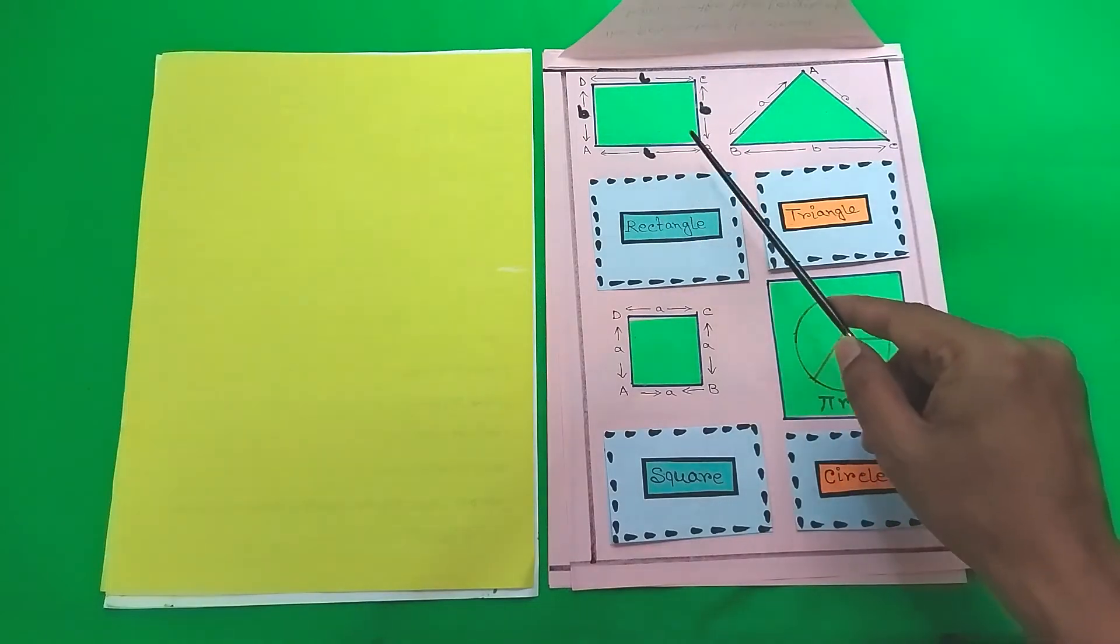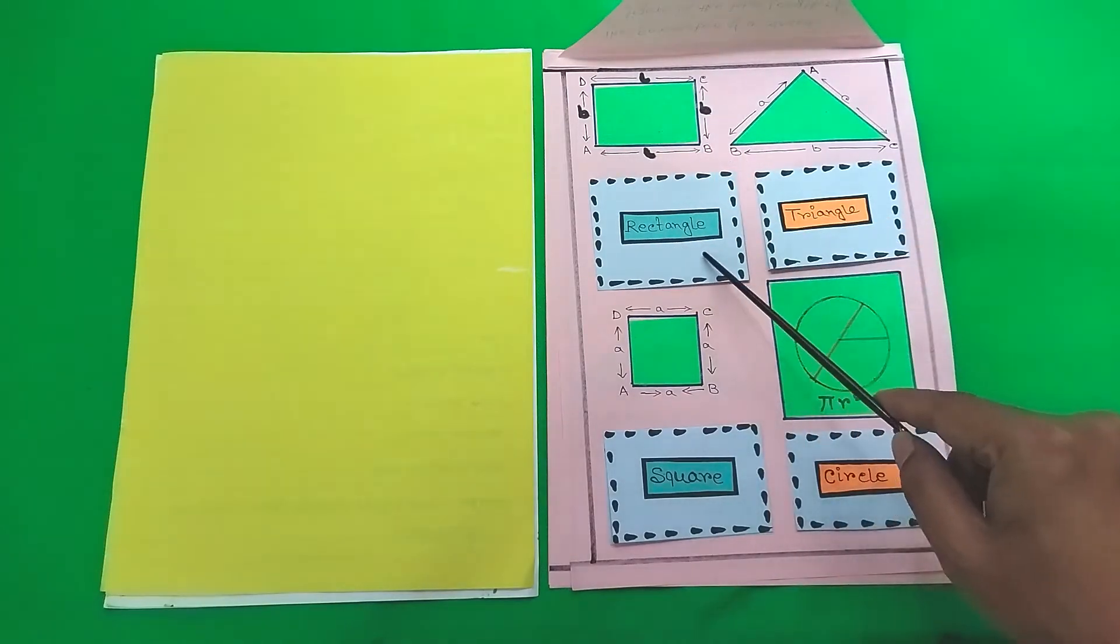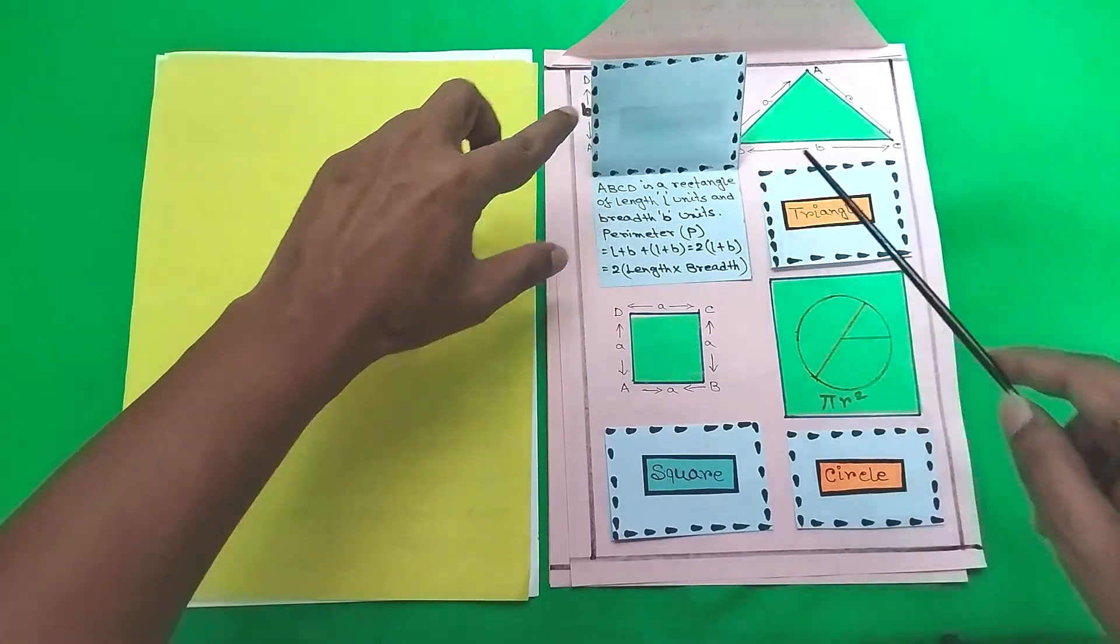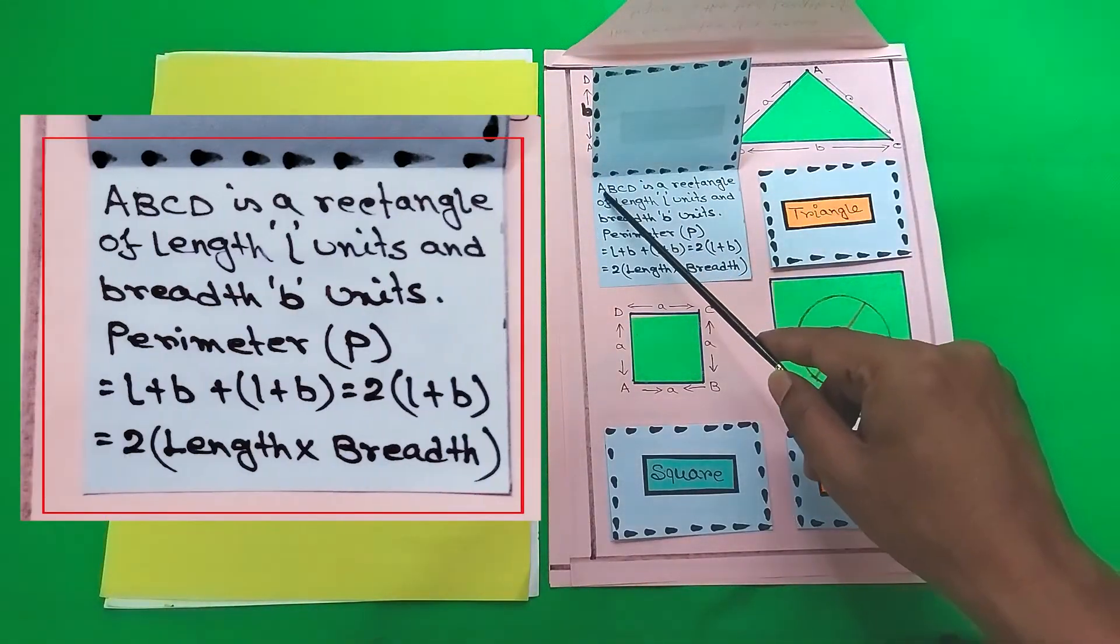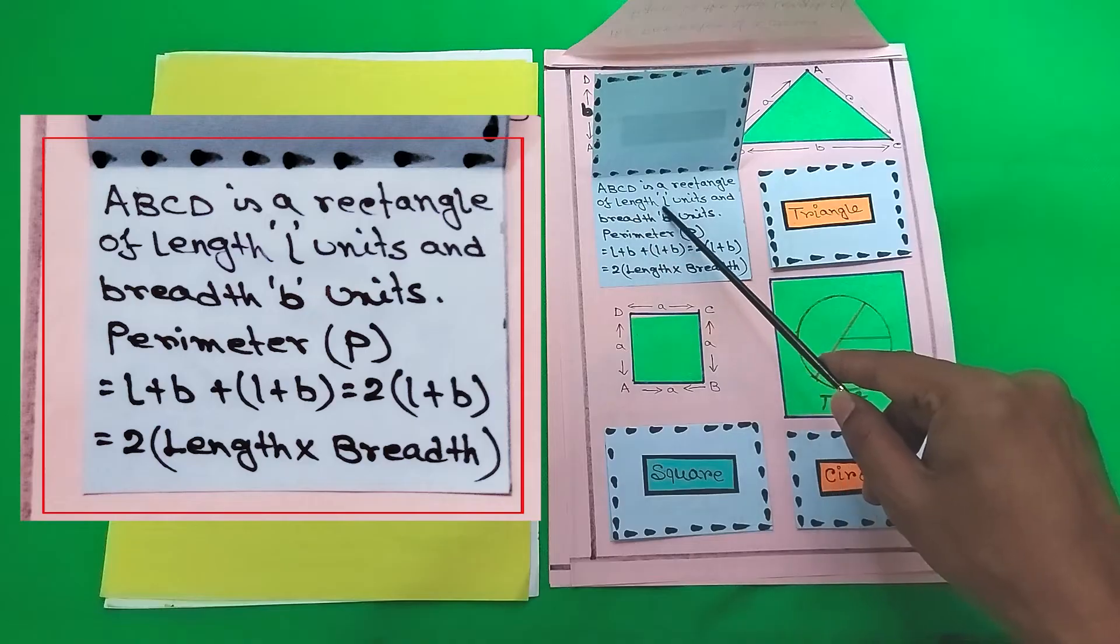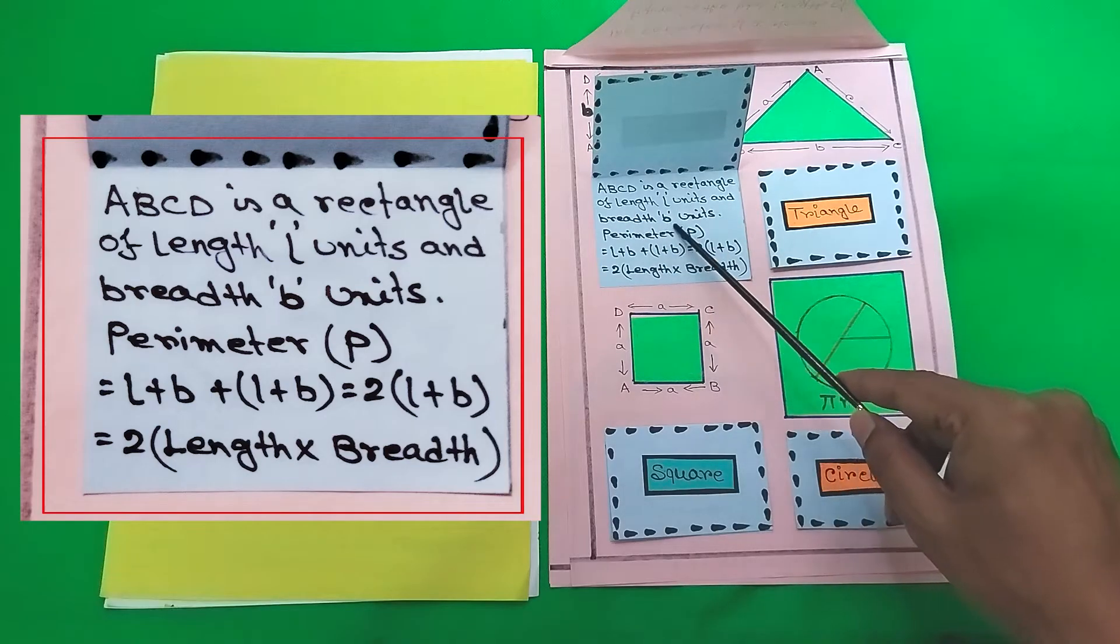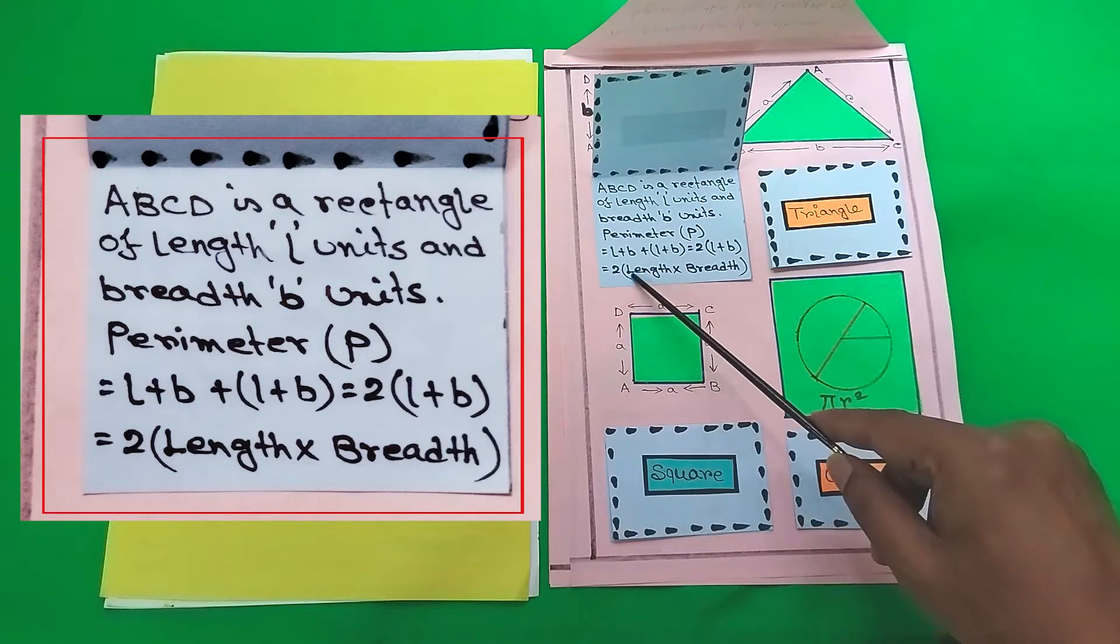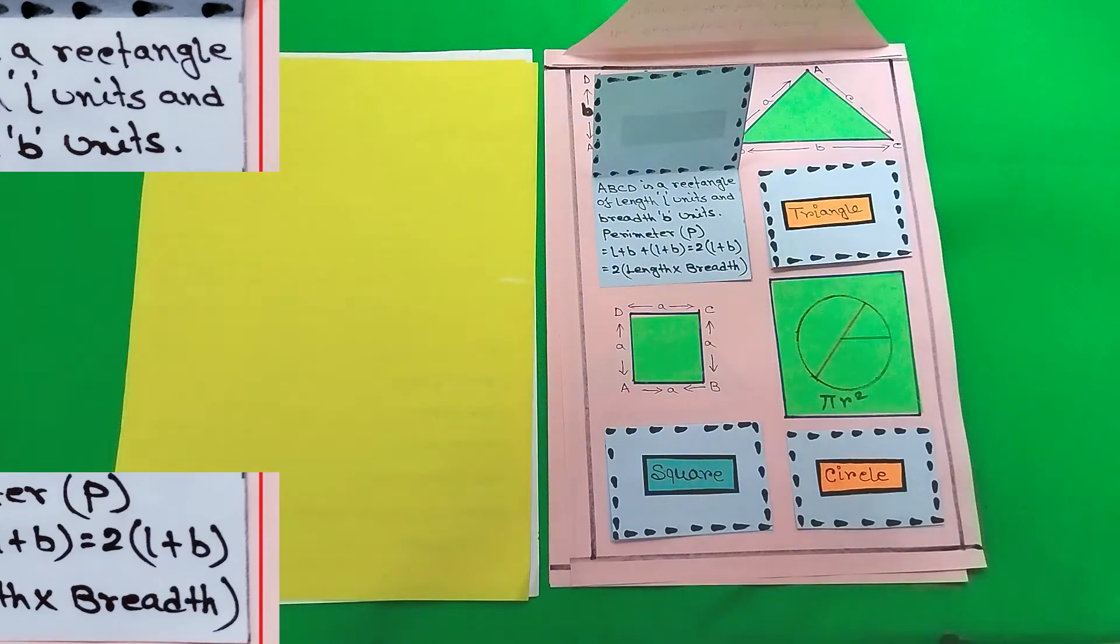So moving on to the perimeter of a rectangle. ABCD is a rectangle of length L units and breadth B units. Perimeter P equals L plus B plus L plus B equals 2 times L plus B equals 2 times length times breadth.